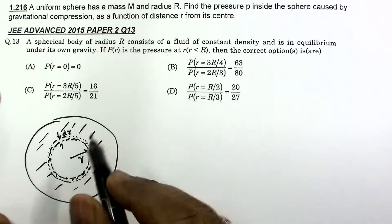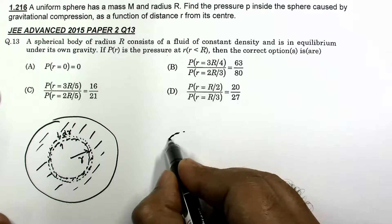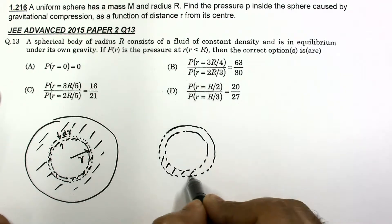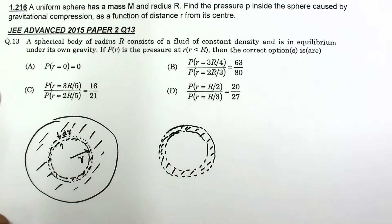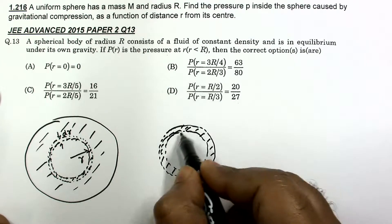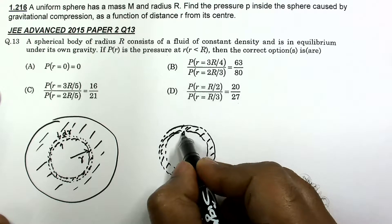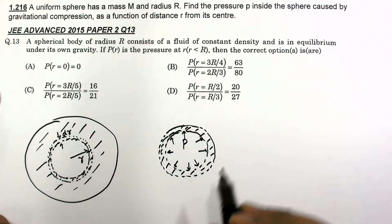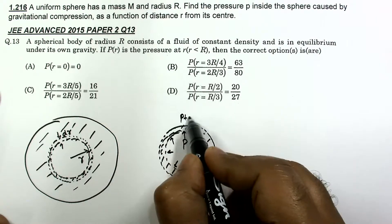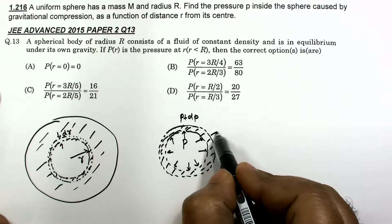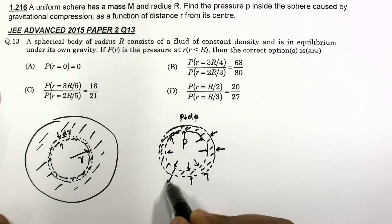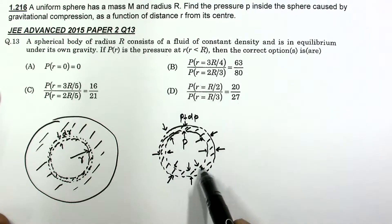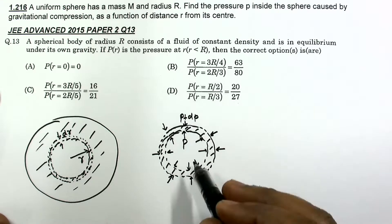Let us draw the free body diagram of this layer only. The material inside has pressure p at the inner surface. Due to this pressure, the force acts outward on the layer. At the outer surface, suppose the pressure is p plus dp, and the force due to that pressure acts inward. Due to the pressure difference, there is a net force on this particular layer, which is balanced by its own gravity.